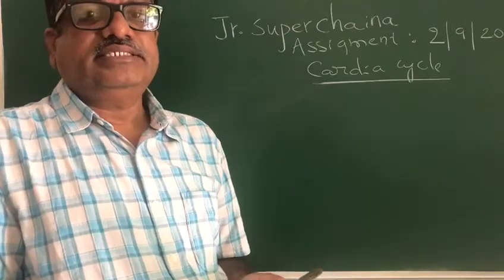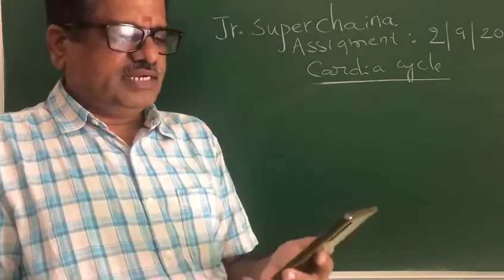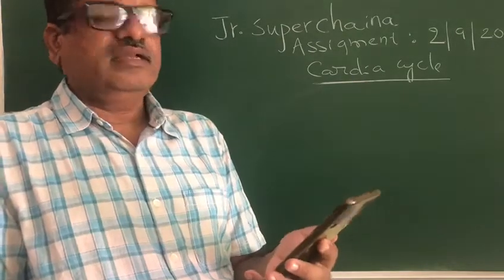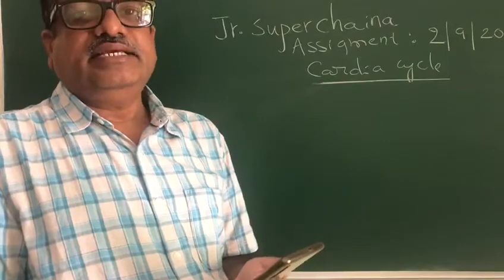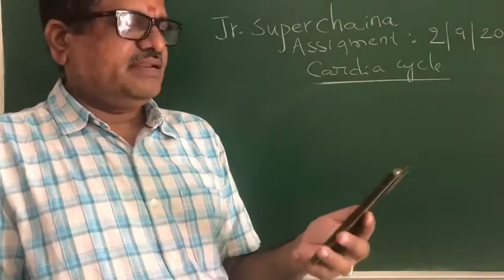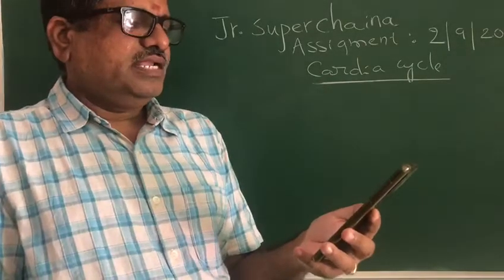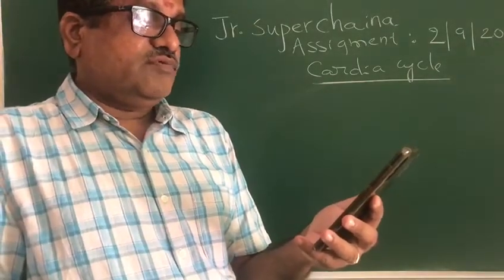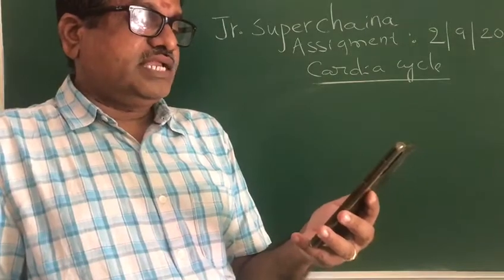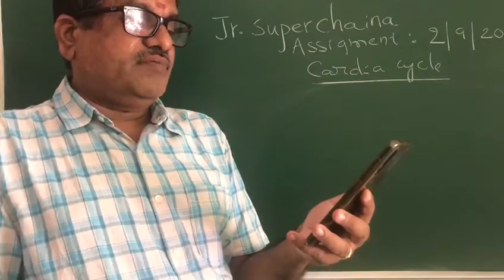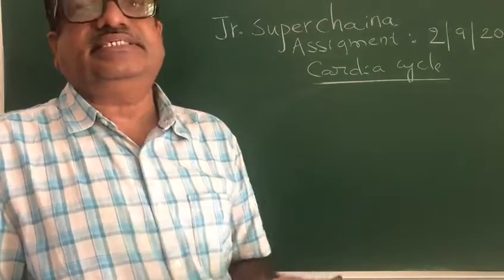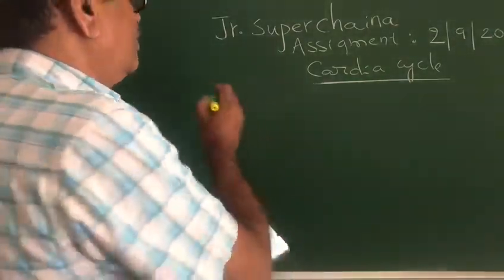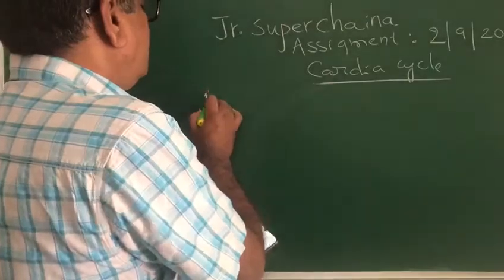Students, let me discuss the assignment related to the cardiac cycle, dated 2nd September. Question one: calculate the duration of one cardiac cycle if the number of heartbeats is 60 per minute. So how do we calculate the duration of a cardiac cycle?